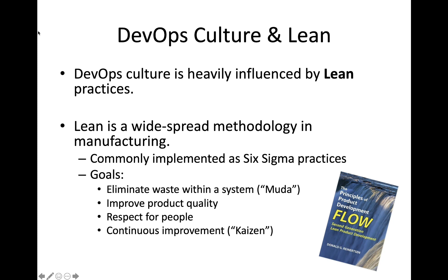Lean is also focused on product quality, and it does that by implementing a continuous improvement process, also known as Kaizen. With continuous improvement, you're constantly monitoring the results from a process and taking that as a feedback loop back into the process itself. So you're constantly trying to figure out: how do I improve a process, make it more efficient? How do I improve the quality of the output from that process?